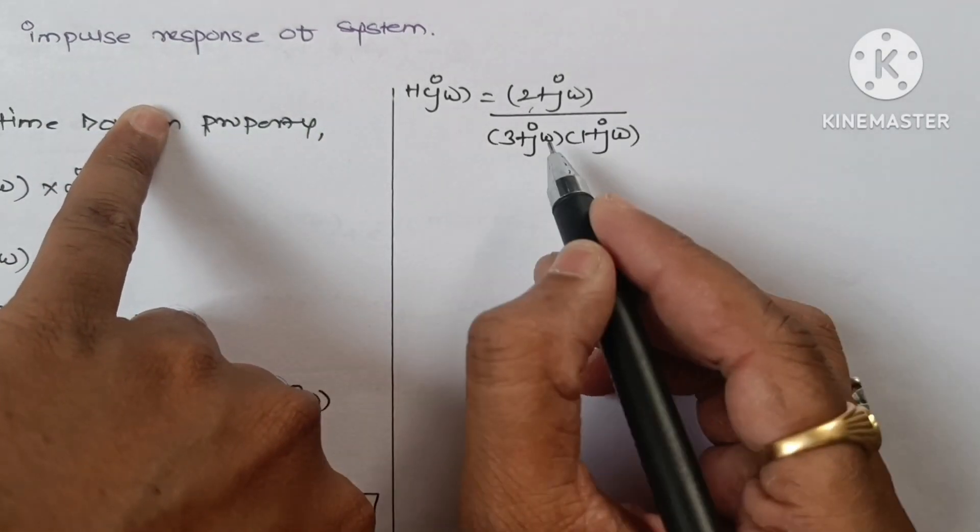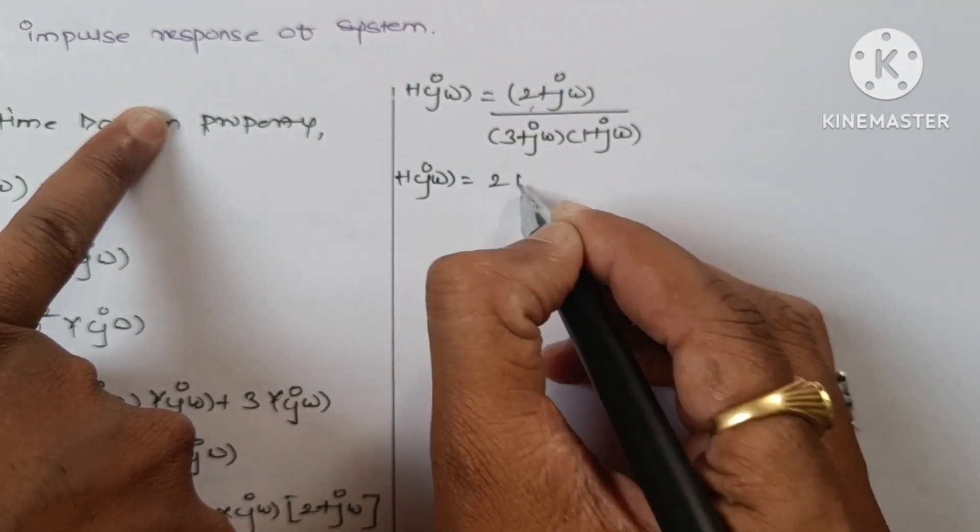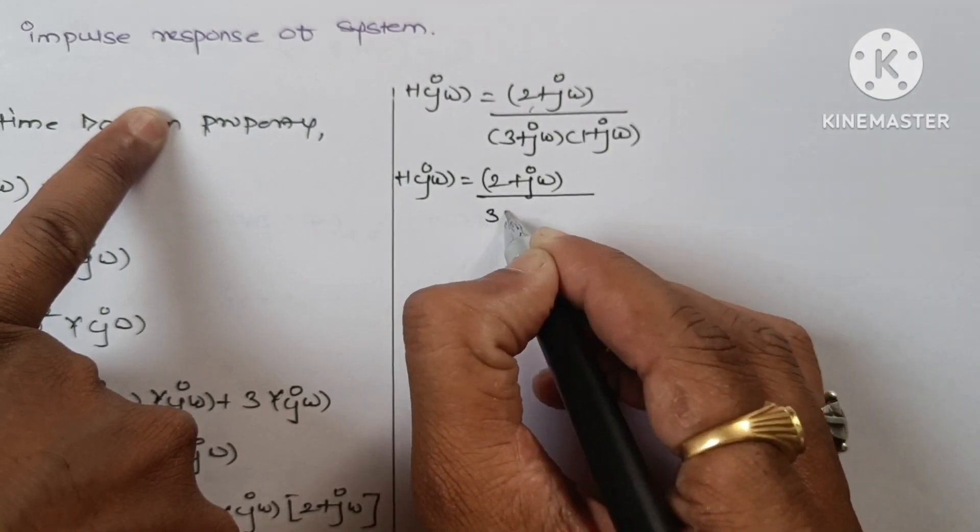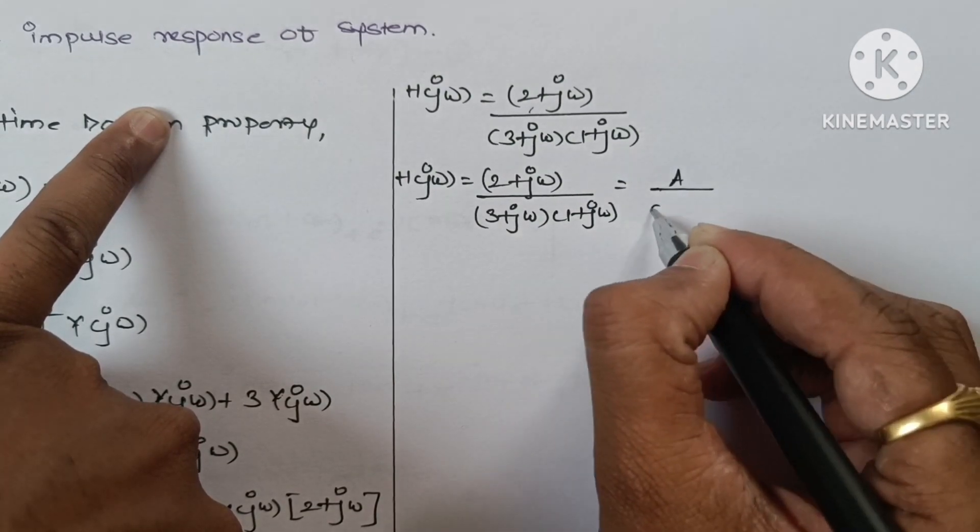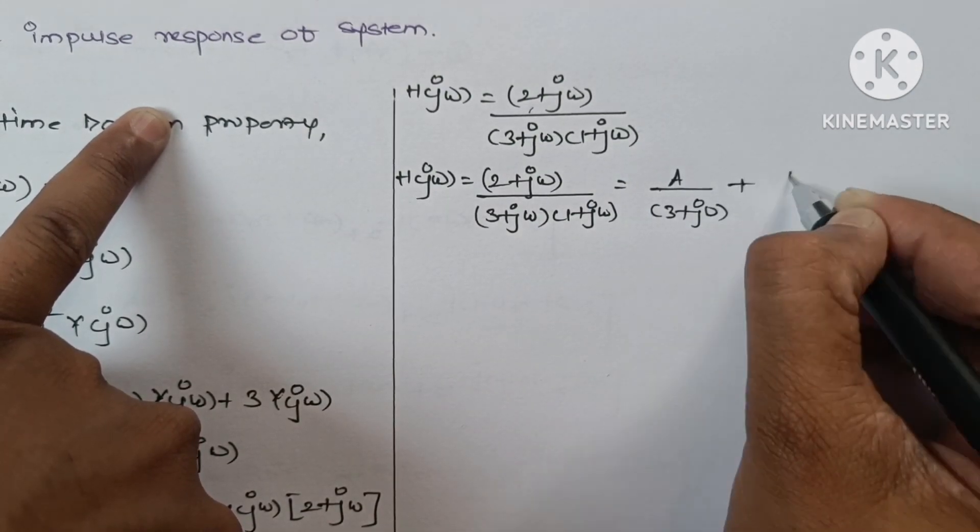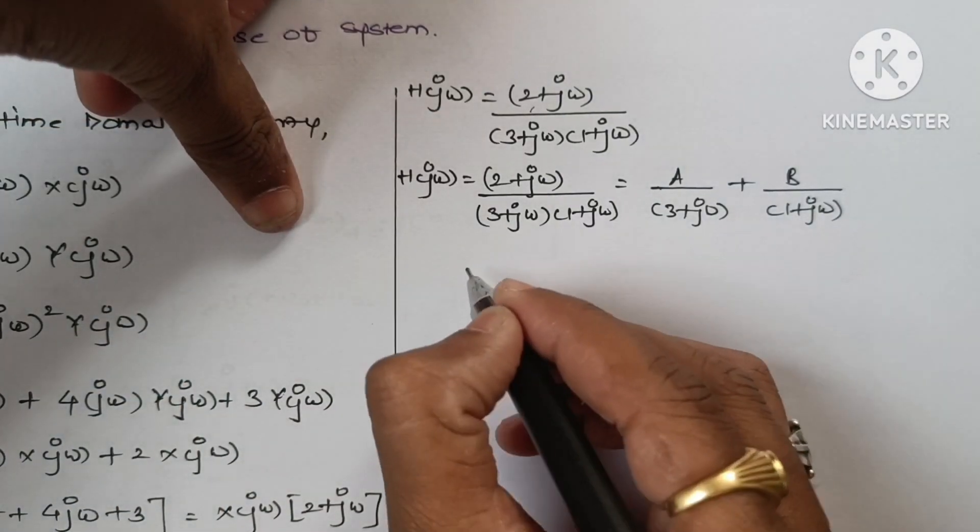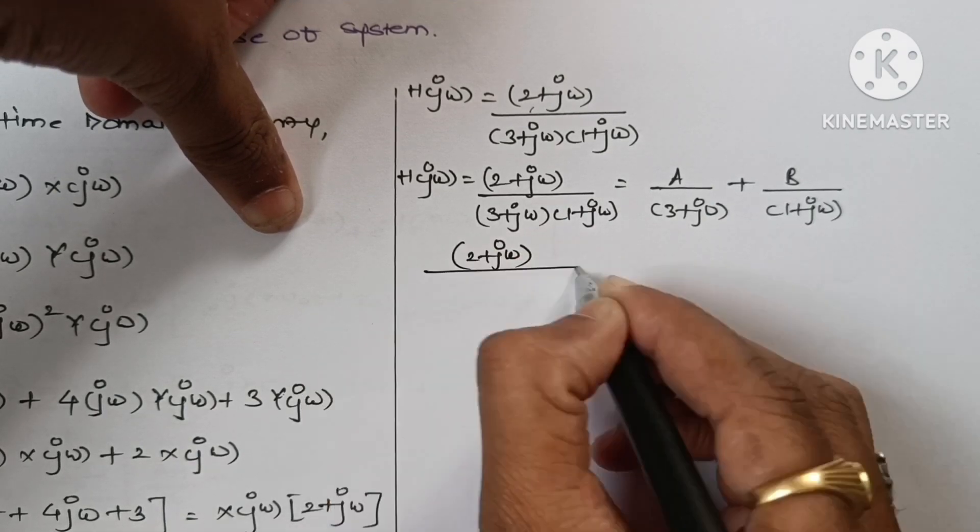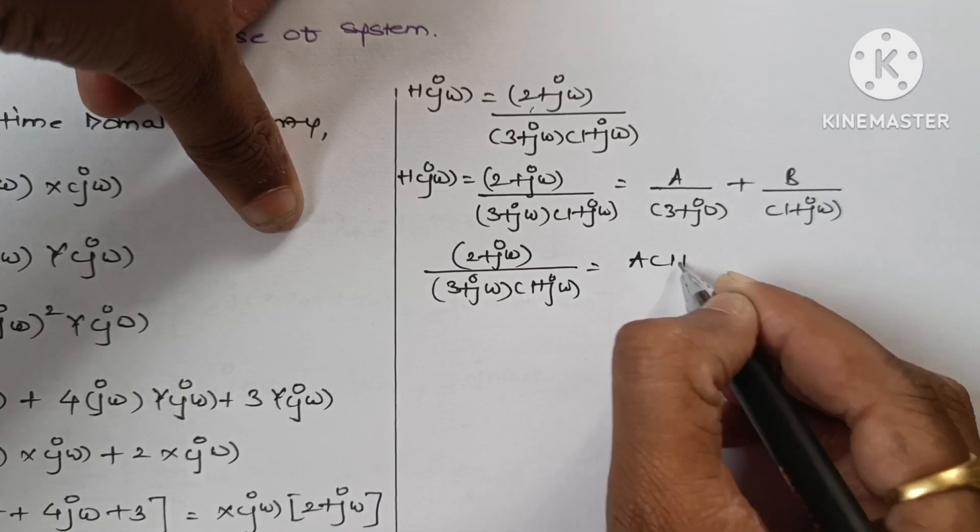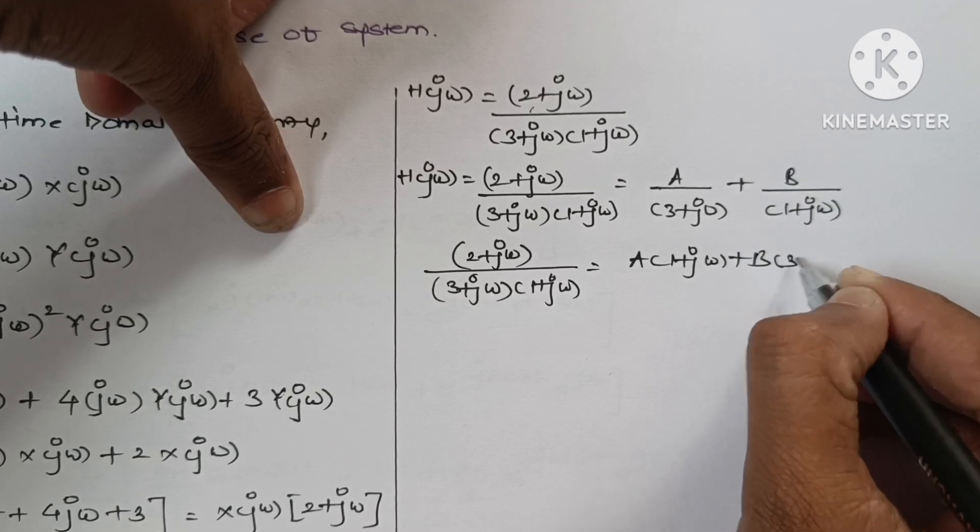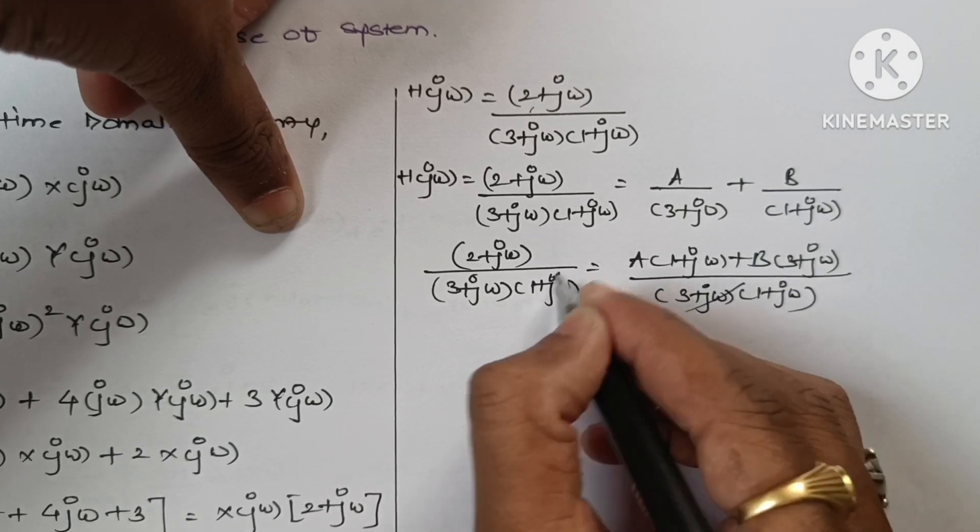So let's apply the partial fraction expansion method for this term. h(jω) will be again this, which will be a/(3 + jω) + b/(1 + jω). Using cross multiplication, we get (2 + jω) = a(1 + jω) + b(3 + jω).